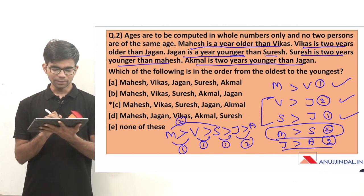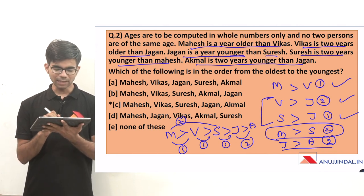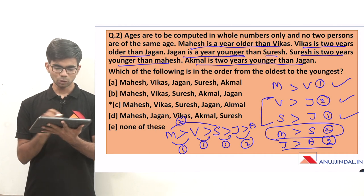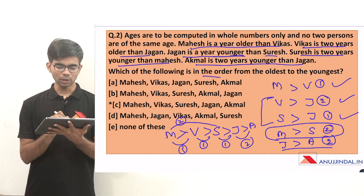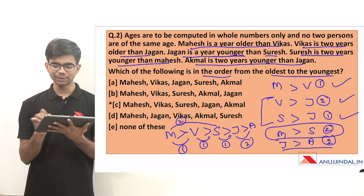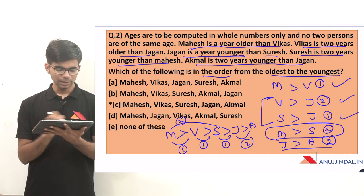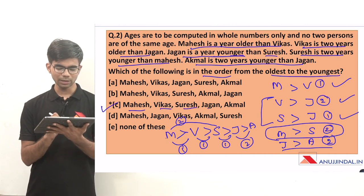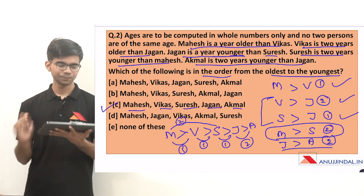So the order from oldest to youngest is: Mahesh, Vikas, Suresh, Jagan, Akmal. The correct option is option C.